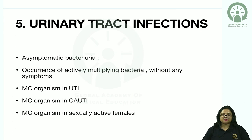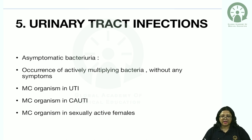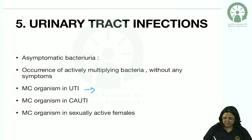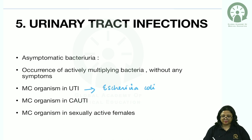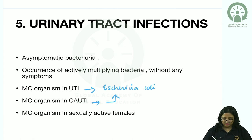In urinary tract infection, asymptomatic bacteriuria refers to actively multiplying bacteria without symptoms. The most common organism implicated is E. coli, accounting for 70–80% of infections. In catheter-associated UTI (a hospital-acquired infection), E. coli remains most common. The most common organism in sexually active females is the coagulase-negative staphylococci — Staphylococcus saprophyticus.